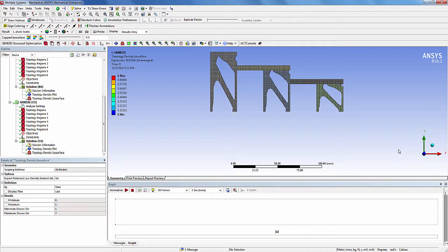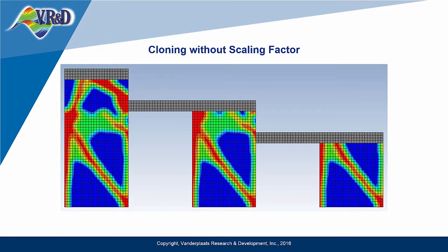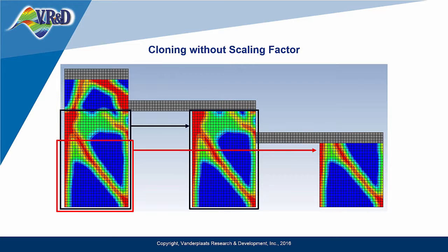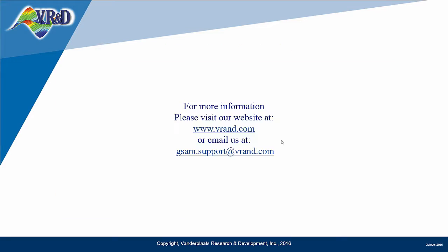As you can see, all the bodies have exactly identical topology but with a different scale. In the first case, that is topology cloning without scaling factor, because of different design spaces of the parent and clone bodies, only the common part of the topology of the parent body is cloned onto the clone bodies. In the second case, that is topology cloning with the application of scaling factor, exactly identical topology is obtained on the clone bodies at a smaller scale. This completes the demo. I hope that it has helped you get familiar with the implementation of topology optimization with cloning in GSAM and GTAM. The similar example is available in the GSAM example manual. If you would like to learn more, I invite you to check other videos about GSAM. For more information, please visit our website at www.vrand.com or email us at gsam.support@vrand.com. Thanks for watching.